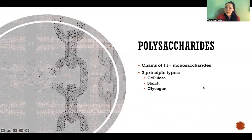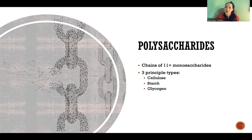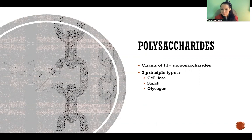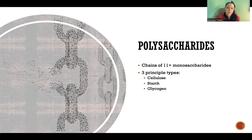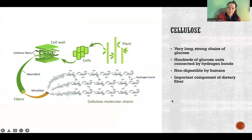Polysaccharides are chains of eleven or more monosaccharides — it could be hundreds of monosaccharides. So carbohydrates can be extremely large molecules. There are three principal types: cellulose, starch, and glycogen. There are a few other types, but they are much less common. The three main ones I'll talk about here are cellulose, starch, and glycogen.